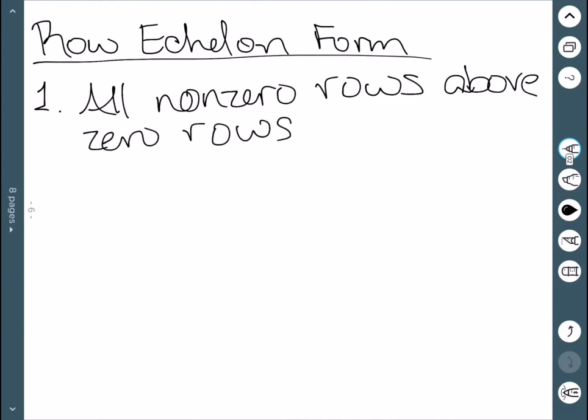The first is to have all non-zero rows above any zero rows. Basically, this just says if we have a row of all zeroes, we should move it to the bottom of the matrix.